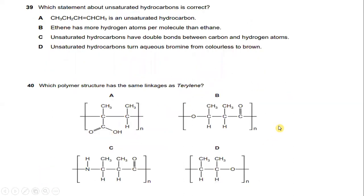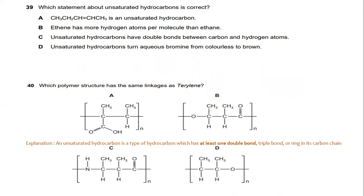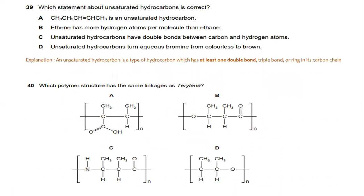Which statement about unsaturated hydrocarbons is correct? This question also appeared in the previous paper. An unsaturated hydrocarbon is a type of hydrocarbon which has at least one double bond, triple bond, or ring in its carbon chain. The answer is that unsaturated hydrocarbons have a double bond between carbon atoms.